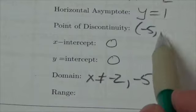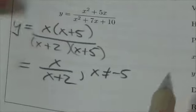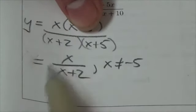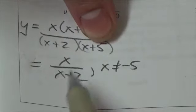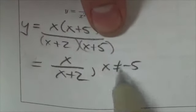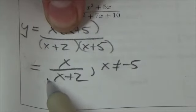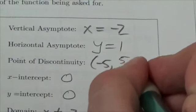Now, the only thing we're missing is the y coordinate of our point discontinuity. To do that, we're going to assume this function actually does not have this restriction. What point would this be going through if we ignored that? Plug in negative 5, and it becomes negative 5 over negative 3. So this is going to end up becoming 5 thirds.